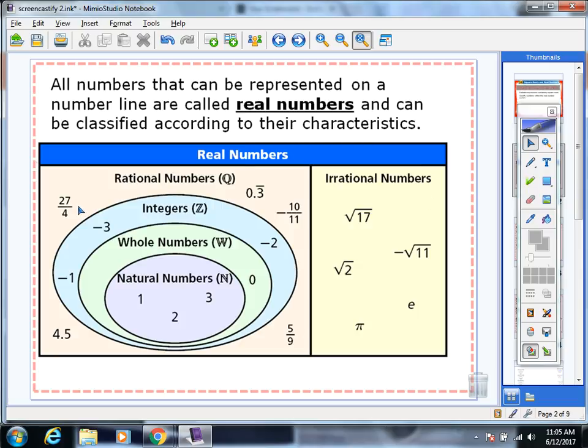Rational numbers are any values that can be written as a ratio, which include terminating decimals and repeating decimals.